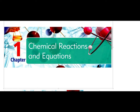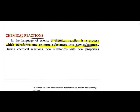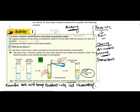We started with chemistry chapter 1, chemical reactions and equations. Let's have a quick recap. We found out that chemical reactions are associated with formation of new substances. Whenever new substances are formed, the process can be called a chemical reaction or chemical process. We studied some activities where new substances are forming.